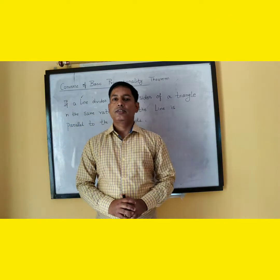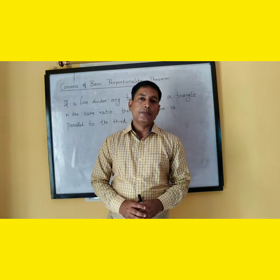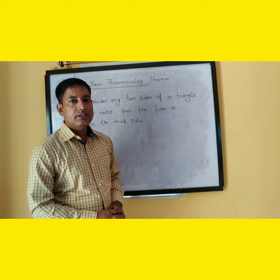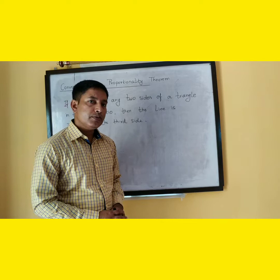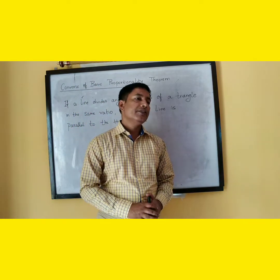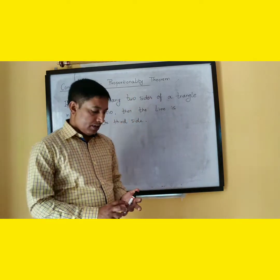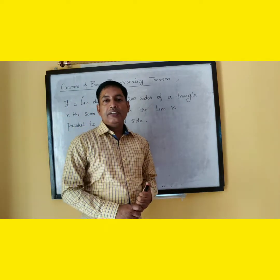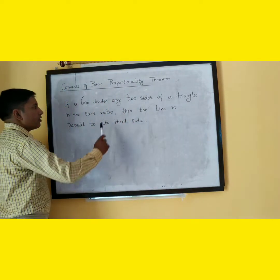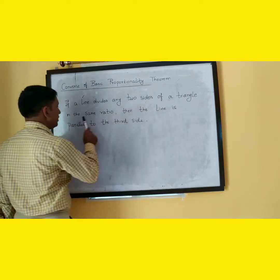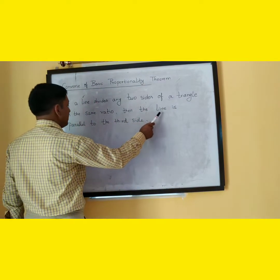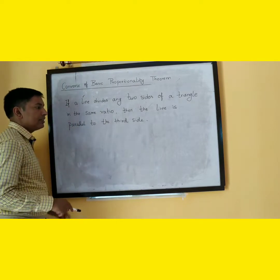We discussed the basic proportionality theorem. Today we will discuss the converse of the basic proportionality theorem, or converse of BPT. It states that if a line divides any two sides of a triangle in the same ratio, then the line is parallel to the third side.